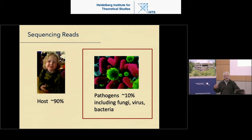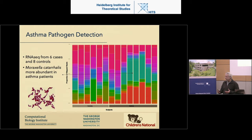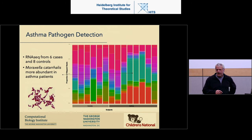The beauty of metagenomics is that in theory you get everything that's going on. In our case-control study — eight asthma cases and six controls — what we found is that the cases have Moraxella catarrhalis in high abundance that's not present in the controls. And like all good bioinformaticians, I teach bioinformatics and my mantra is: how do you figure out when you don't know something?